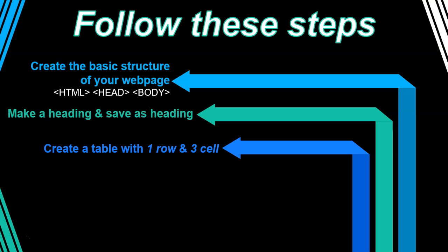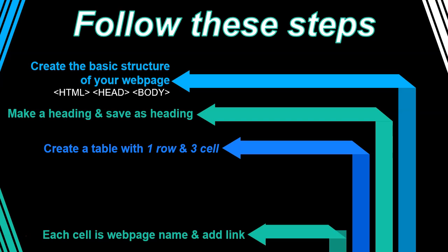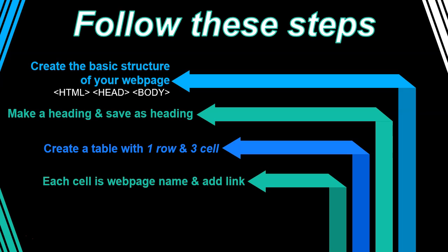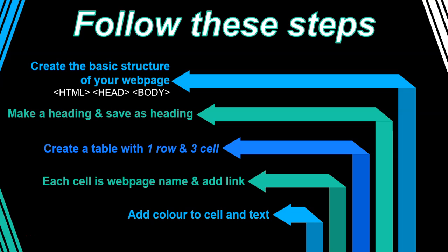Then we're going to create a table under that heading — a one-row table with three cells, because you probably need to have three separate web pages. If requirements change and you need four, then however many pages you want to create, that's how many cells you'll need. Inside that table, each cell is going to be a web page name and a link to that particular page — basically creating a navigation structure. Then we're going to add some color to the cells and text to make it look nice, and that will set us on the right track to get all the marks for the website component of your PAT.